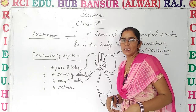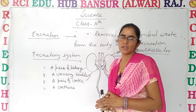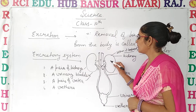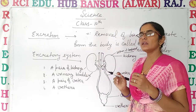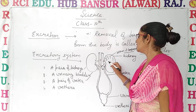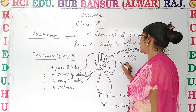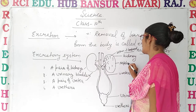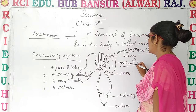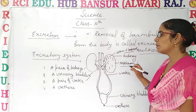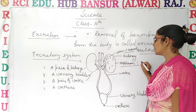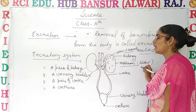The kidneys are located in our abdominal cavity. There are two kidneys — a pair of kidneys — and they are bean-shaped. If we look at the kidney's internal structure, there are many filtering units. In the kidney there are many filters or functional units. There are millions of nephrons present in the kidney. The function of the kidney is to filter the blood.